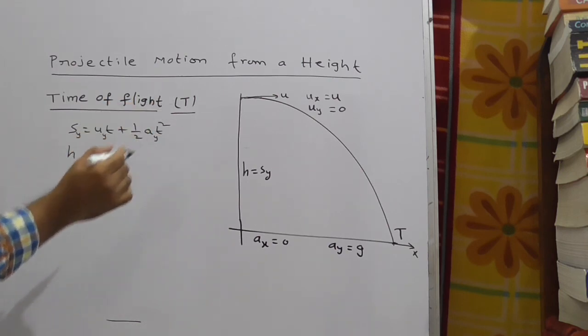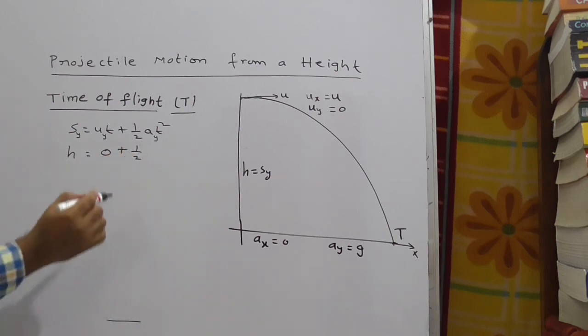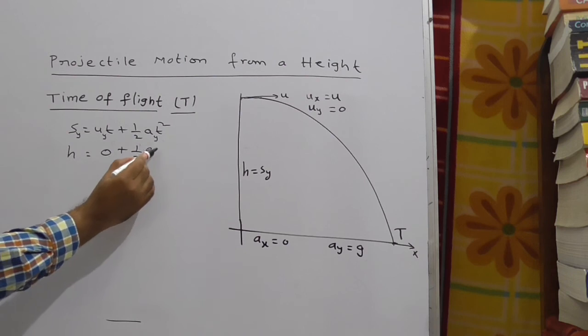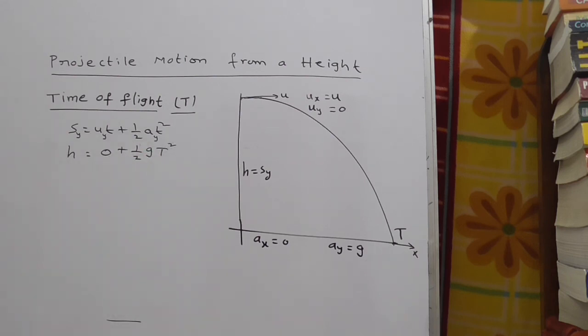So what is uy? uy is 0, 0 into something is 0 plus 1 by 2 ay. You can take this as g. So here t is nothing but T square, capital T.